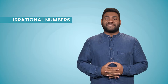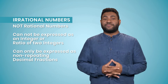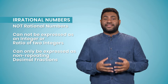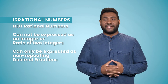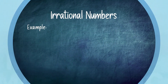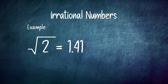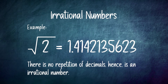Irrational numbers are the numbers that are not rational numbers — in other words, they cannot be expressed as an integer or ratio of two integers. The numbers in this group can only be expressed as non-repeating decimal fractions. For example, the square root of two is 1.4142135623. In this number, there is no repetition of decimals, and hence it falls under the irrational number group.